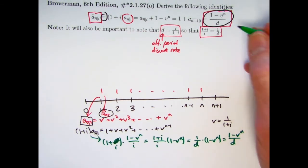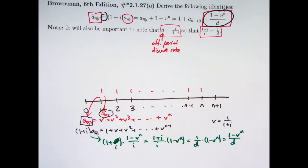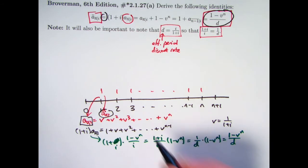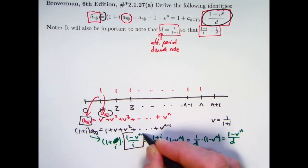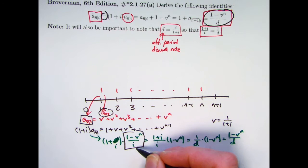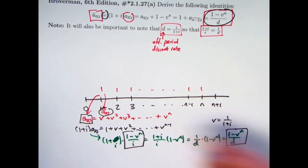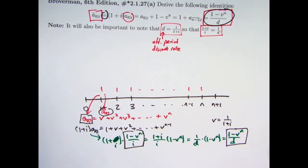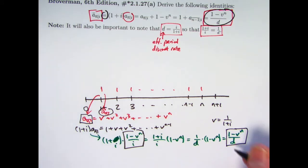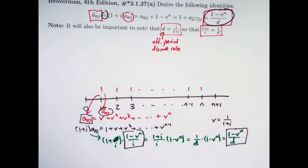Before I move on, let's mention a fortunate coincidence. The present value of an annuity immediate is (1 − vⁿ)/i, and notice there's an i in the denominator — and the word 'immediate' starts with i. And the present value of the same annuity as an annuity due has d in the denominator — and the word 'due' starts with d. So it's very fortunate that we have that coincidence.